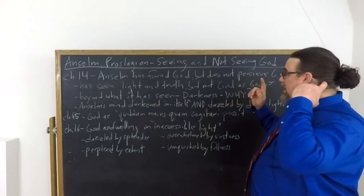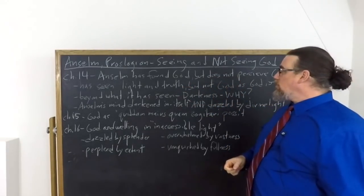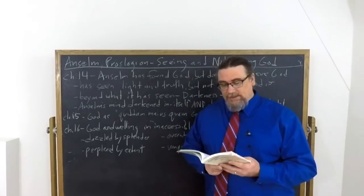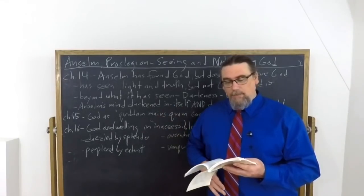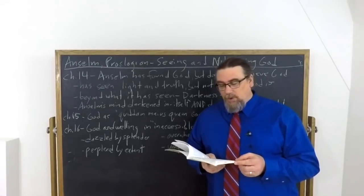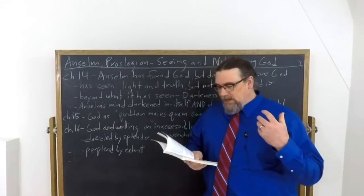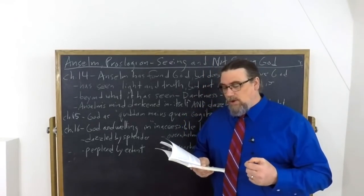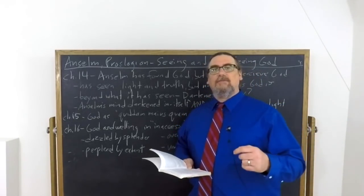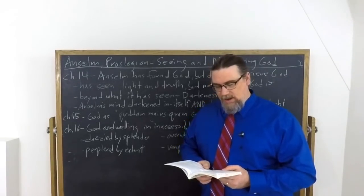So he expresses this by saying that he has seen the light and the truth, but he has not seen God as God. What has he seen? He's seen that God is the highest of all beings than which nothing better can be thought. He has life itself, light, wisdom, goodness, eternal happiness, happy eternity exists always and everywhere. That's a lot of stuff. But he says, if you have not found your God, how is he the one who you have found? But if you have found him, why do you not perceive him? Why are you not grasping the totality that is God?